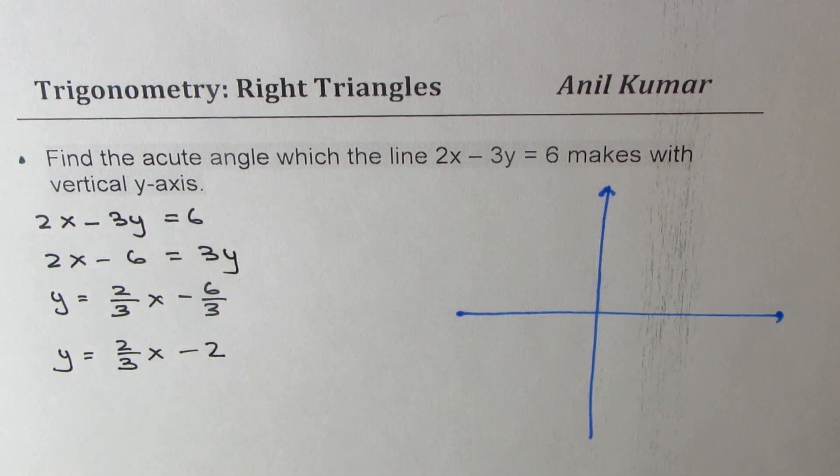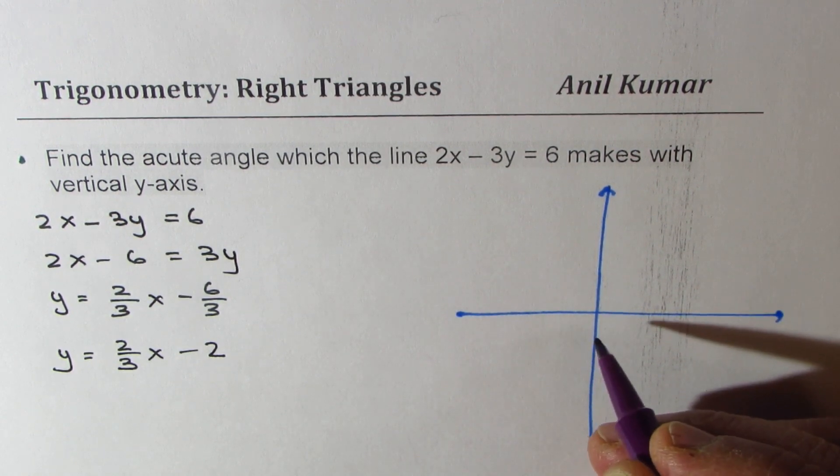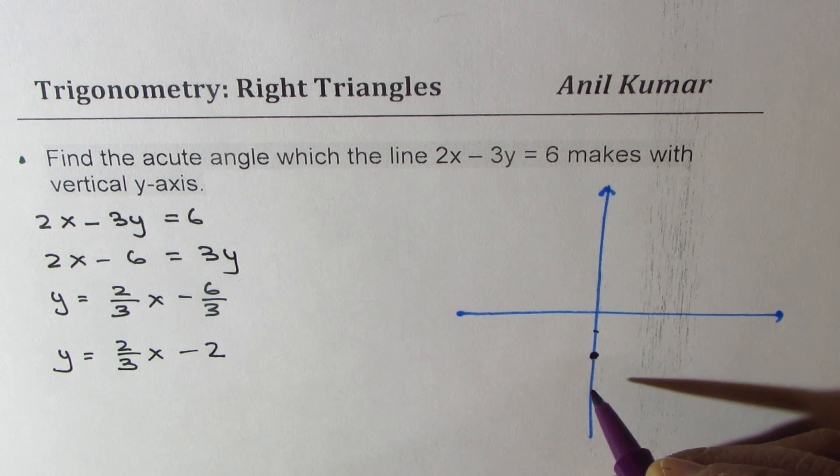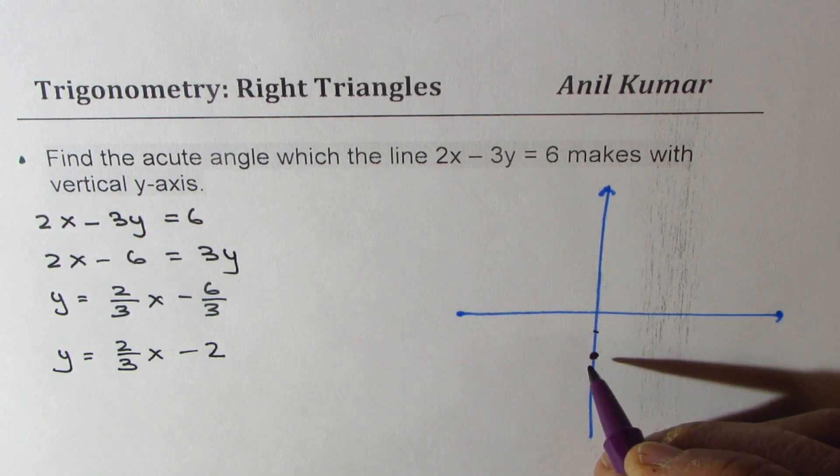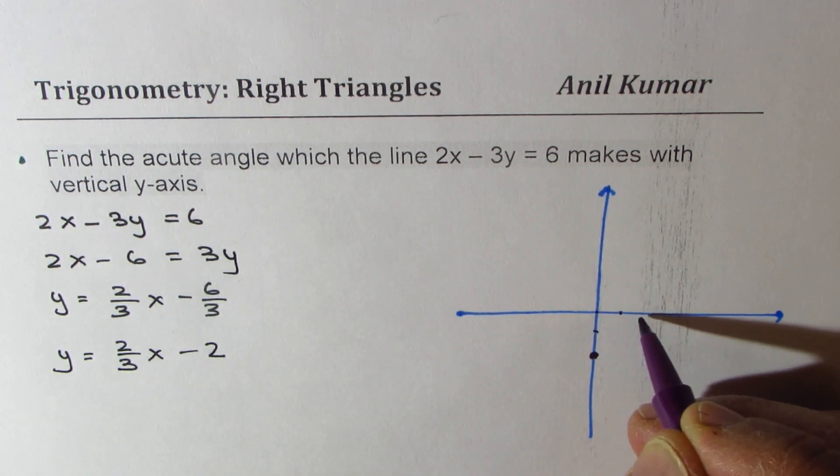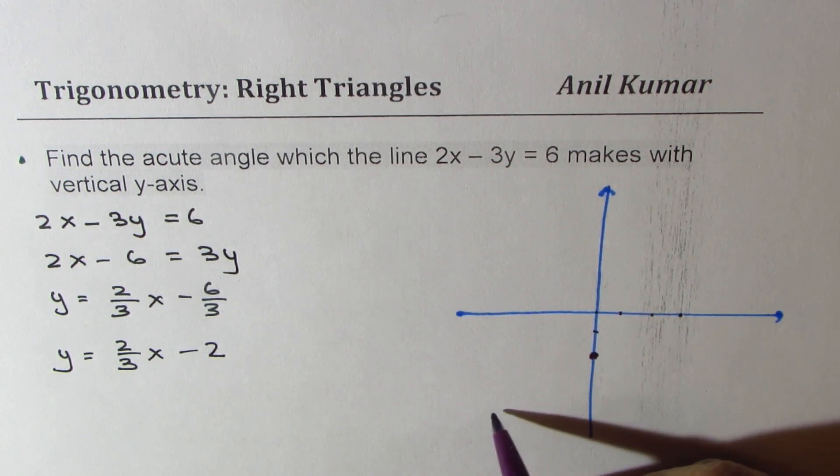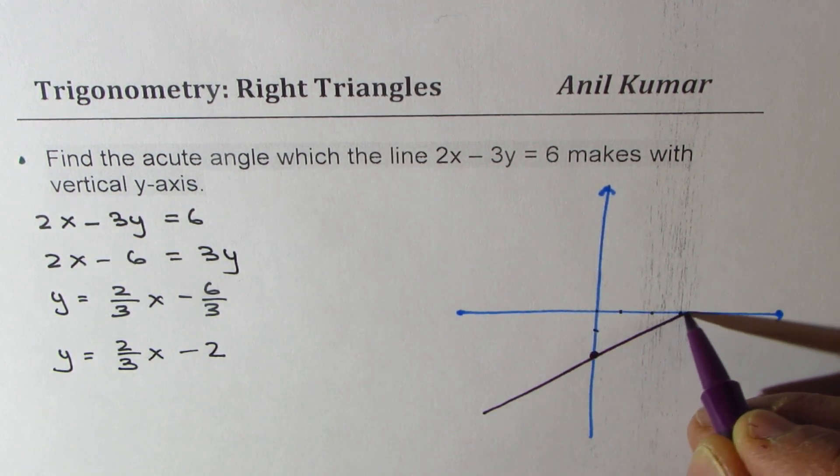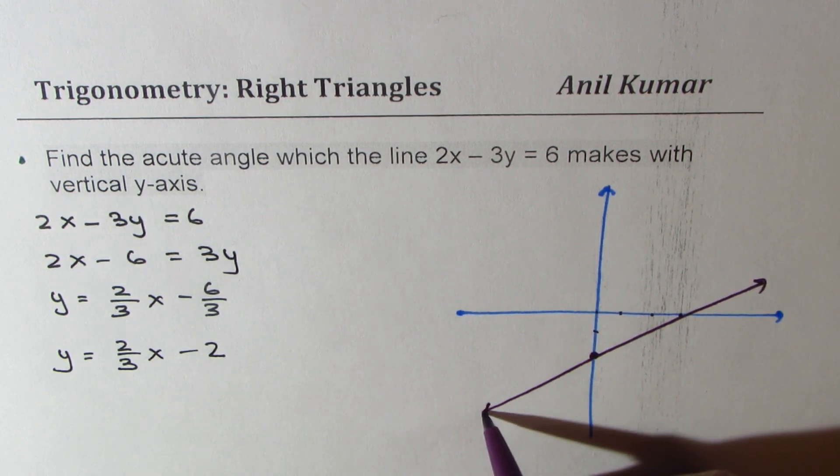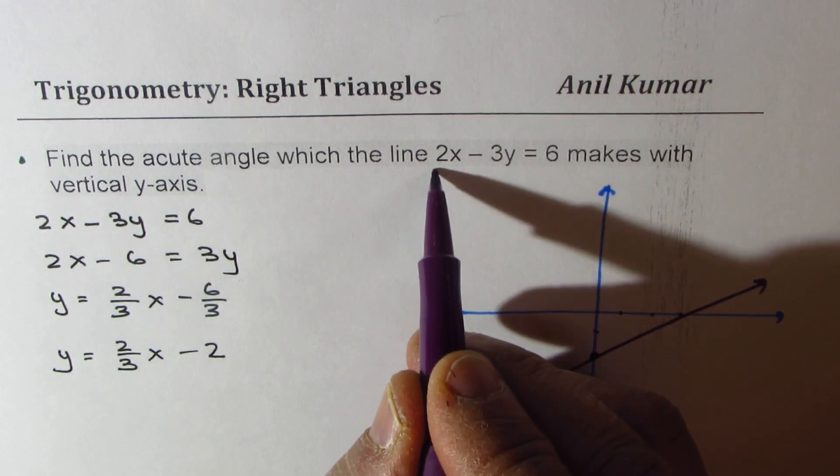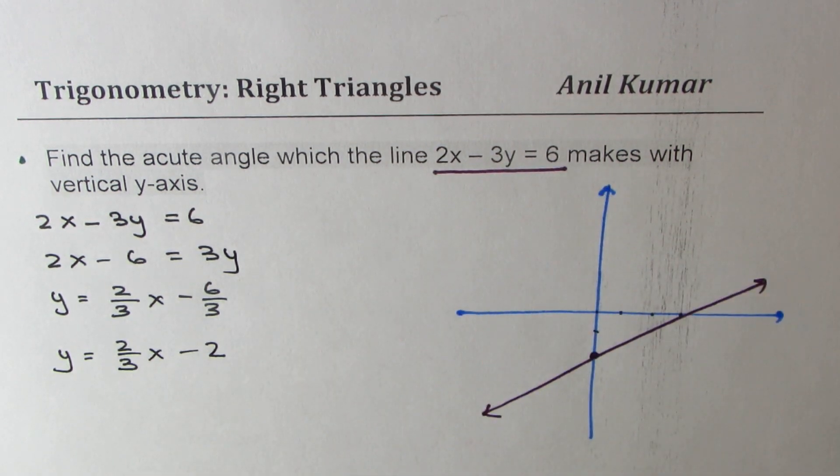So that means that we have a vertical y-intercept as minus 2 so that becomes one point. Slope is 2 over 3 going up 2 and then 3 units so that becomes the line. So we get a line which is kind of like this. So that becomes our line 2x minus 3y equals to 6.